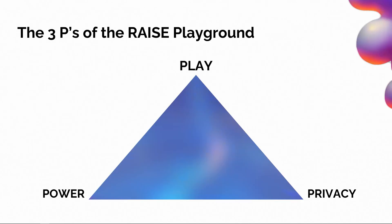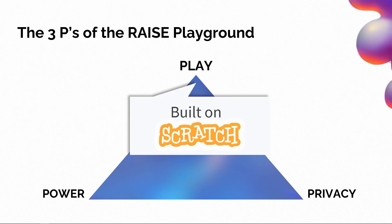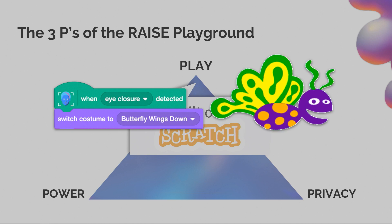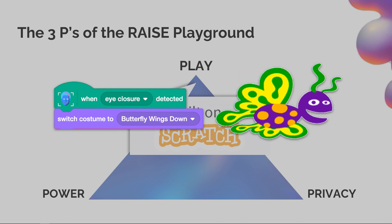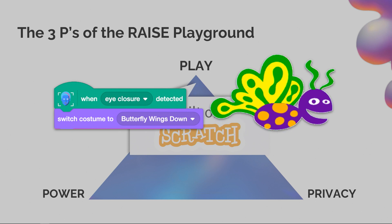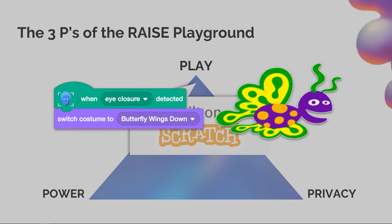To frame the RAISE Playground, here's my very contrived acronym of the three P's. The first P is Play. We get a lot of use out of Scratch as a creative coding platform where it encourages students to make digital experiences — creating games or small animations. For example, if we have a block that can detect when your eyes close, we can make a butterfly kiss animation. With AI, we're able to make very creative, fun, interactive experiences and make it personally meaningful for the student.